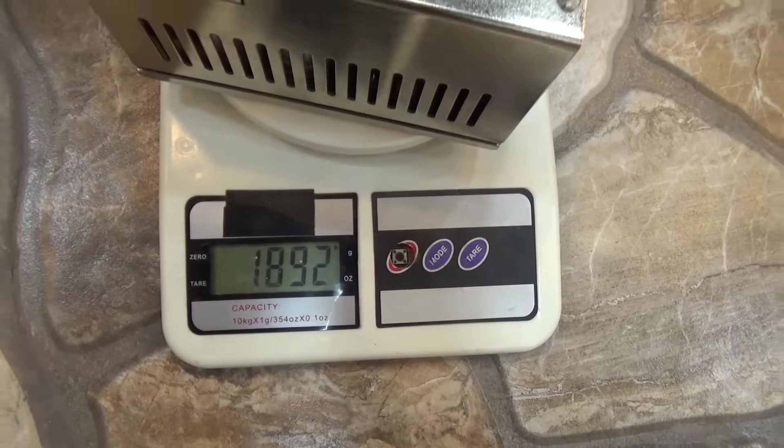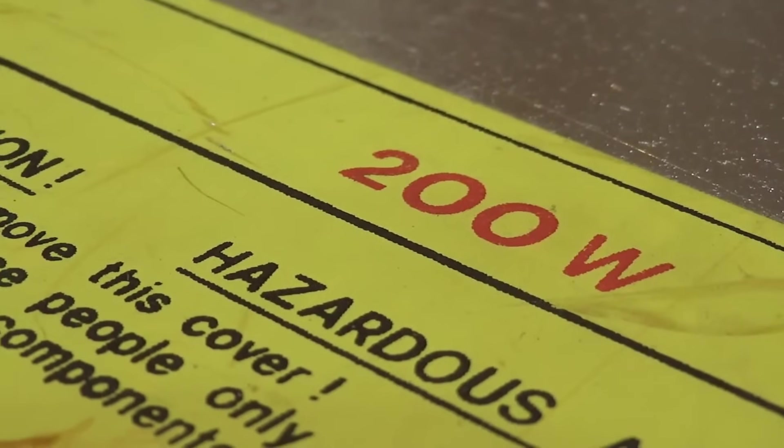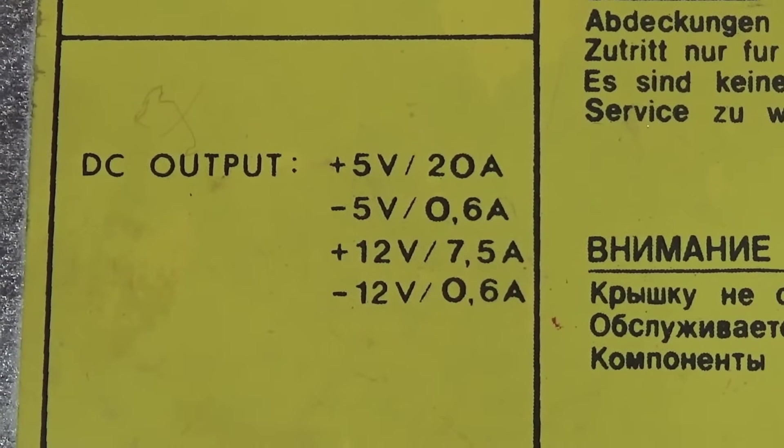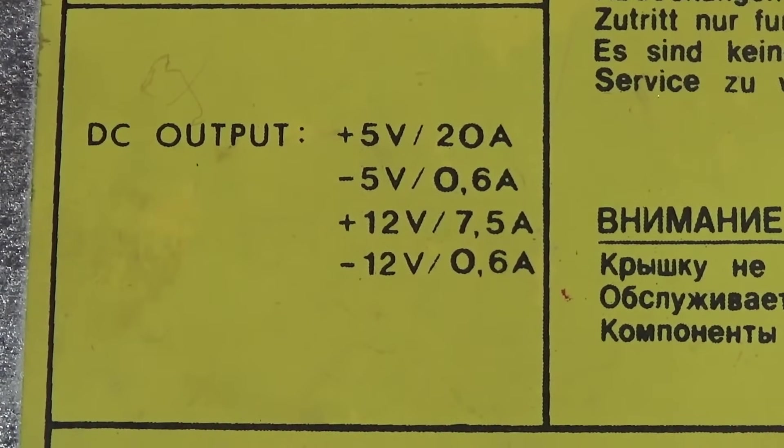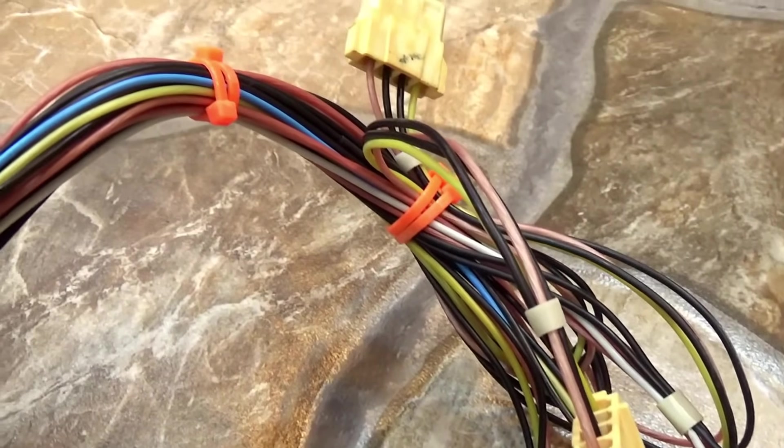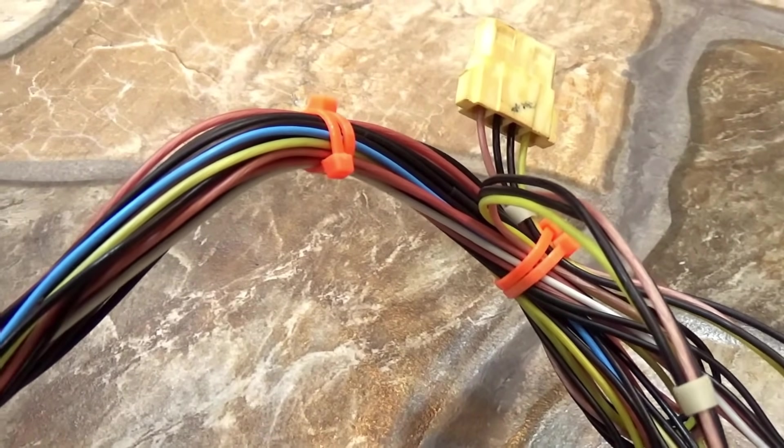This power supply weighs almost 2 kilograms. The form factor is standard, with a power of 200 watts. It provides 4 output voltages, 2 power rails 12 and 5 volts, with currents of 7.5 and 20 amps respectively, and negative low current lines of minus 5 and minus 12 volts.